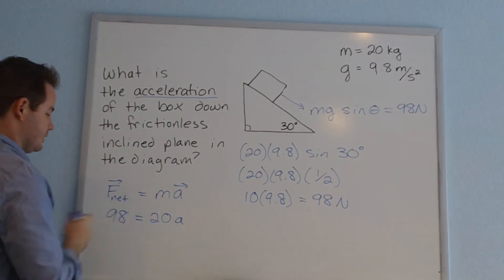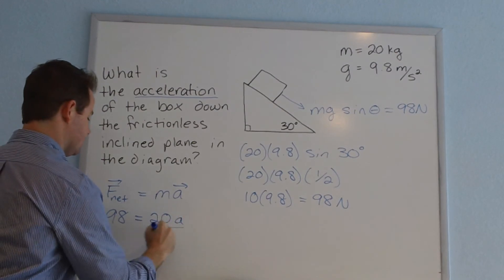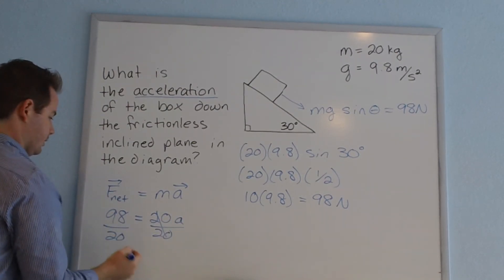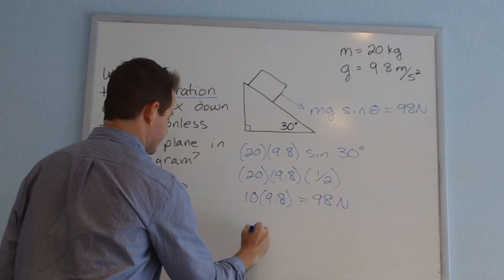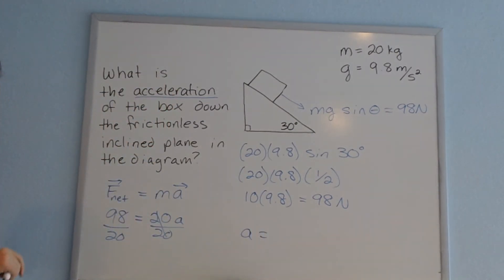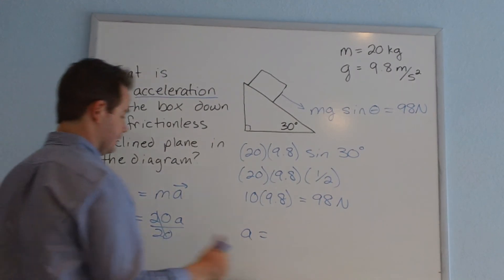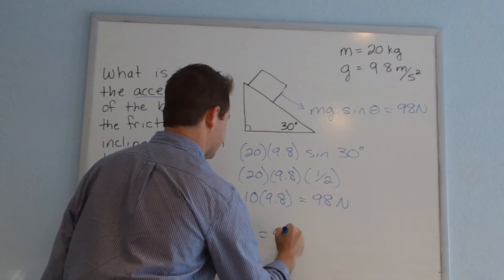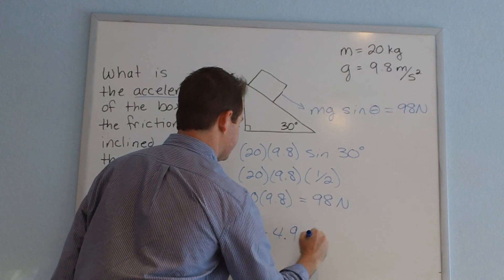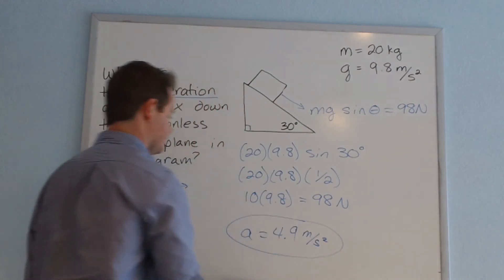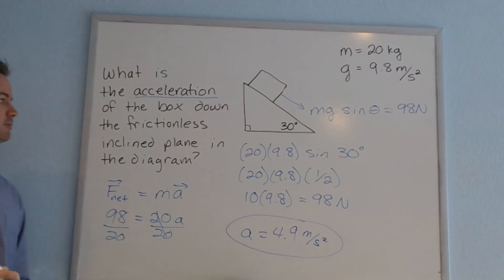98 equals 20 times our acceleration. We can divide both sides by 20, and we're left with an acceleration. This is another complex calculation. A way to simplify it: 2 into 9.8 gives us 4.9, so 20 into 98 gives us 4.9 meters per second squared as the acceleration of this object.